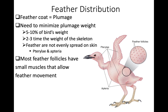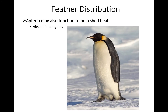Birds control feather position partly through filoplumes, which help sense the distribution of larger feathers, and also through small muscles attached to feathers at the base of the follicle for fine movement and organization. The apteria serve to allow birds to shed heat. Birds that are overheated can elevate their feathers to let wind get closer to the skin. Birds that must retain heat — like those in cold environments — actually lack apteria and have a more even coat.